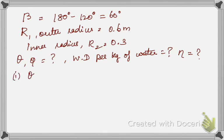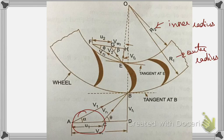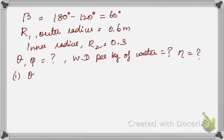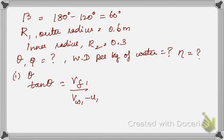To determine theta, we check the velocity triangle diagram. From the diagram, tan(theta) equals the opposite side divided by the adjacent side, which gives: tan(theta) = vf1 / (vw1 − u1). However, none of these values are yet known, so we must determine them one by one. For a series of vanes, we need u1, vw1, and vf1.